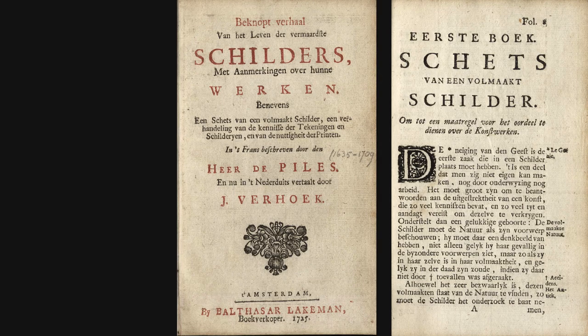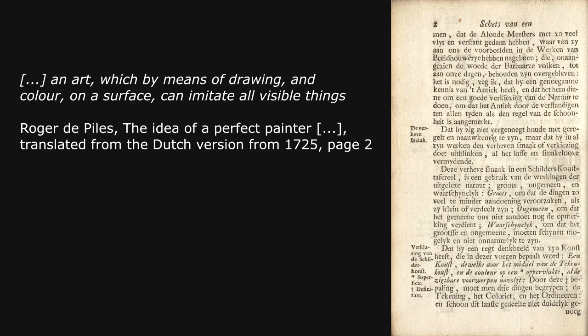I want to show you another quotation by another writer. This is from Roger de Piles: 'The art of painting is an art which by means of drawing and color on a surface can imitate all visible things.' These two quotations are very similar. One can wonder why give a second quotation which is almost the same as the first, but it is good to see the consistency of how they define the art of painting.